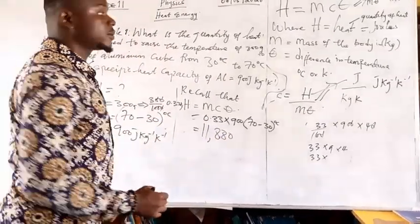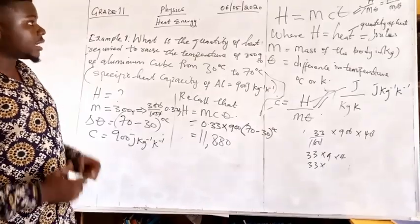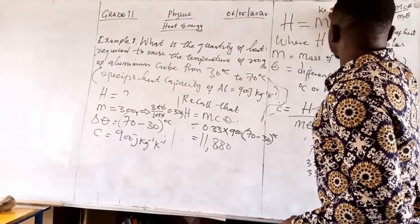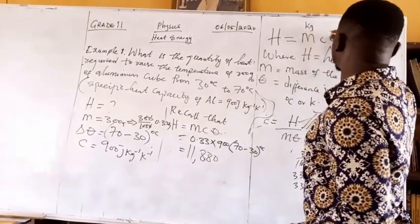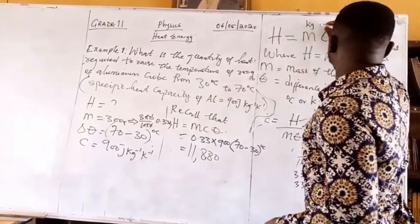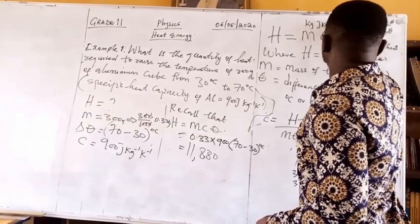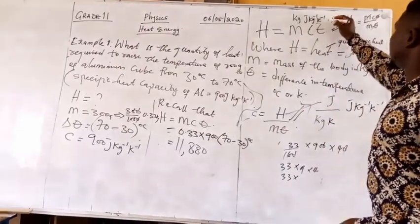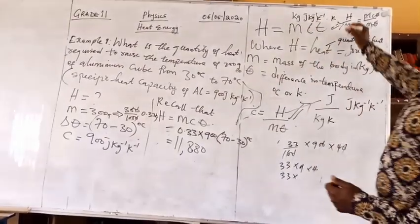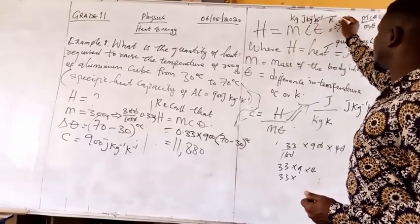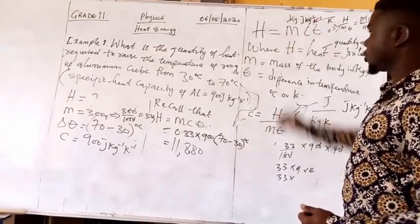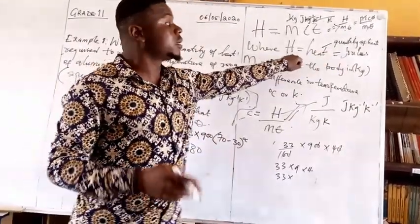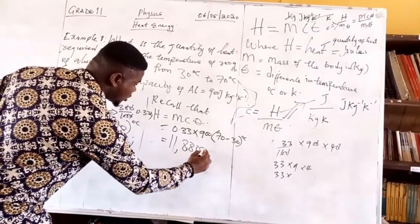The unit is joules. Kilogram cancels and Kelvin cancels from your knowledge of dimension and law of indices, leaving us with joules. This corresponds with what we said, that the heat capacity or quantity of heat is measured in joules.